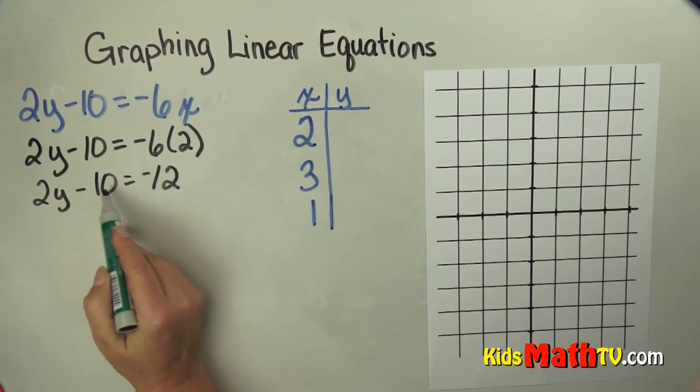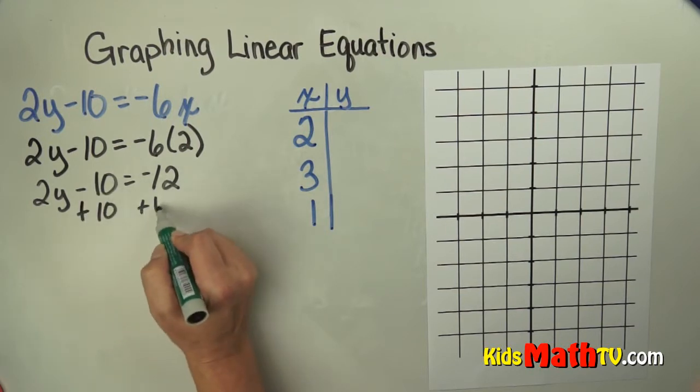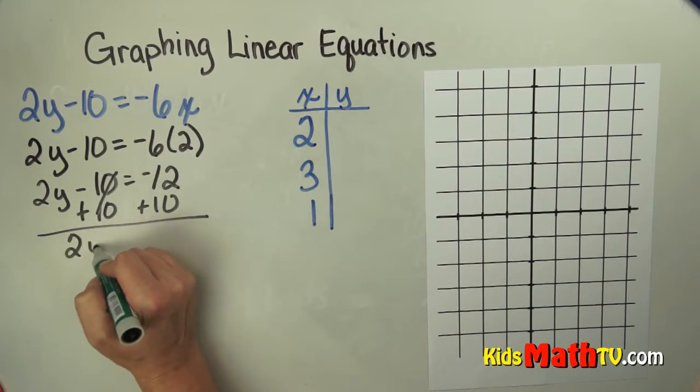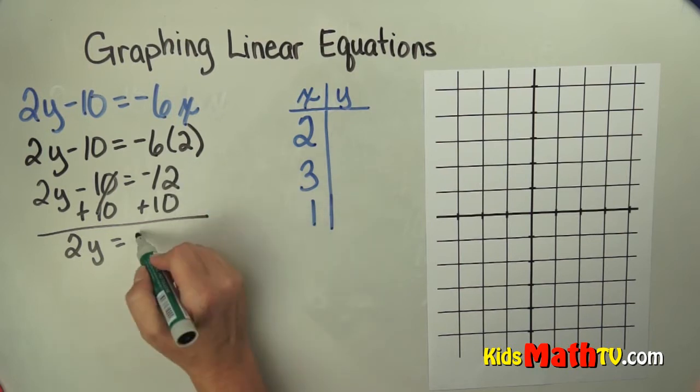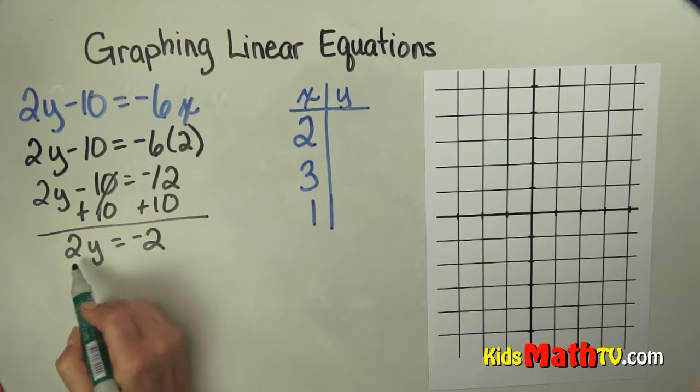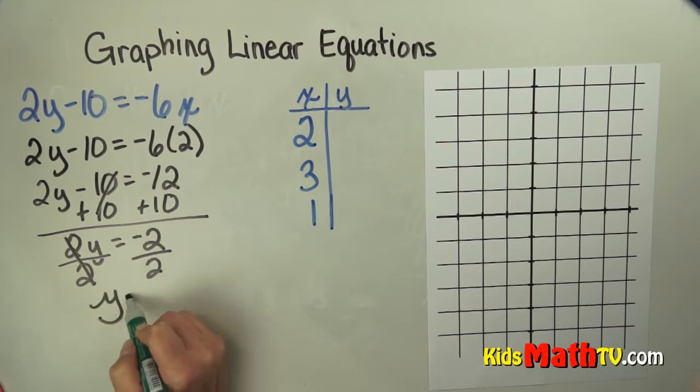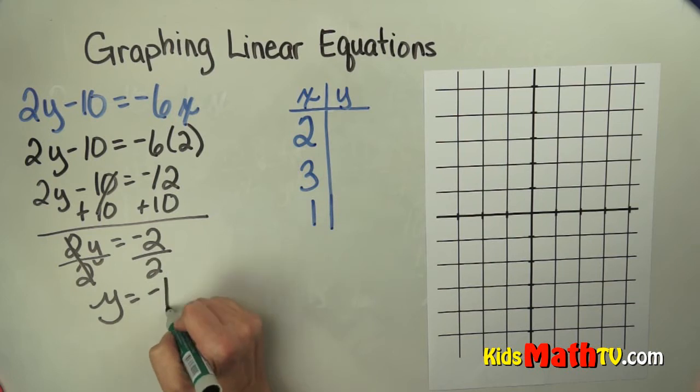Now I'm going to add 10 to both sides of this equation. Add 10 here, add 10 here. When I do that, negative 10 and positive 10 make 0, so I have 2y left over. And negative 12 added to 10 is negative 2. Now I can divide both sides by 2, which cancels those out. So now I have y equals negative 2 divided by 2, which is negative 1.